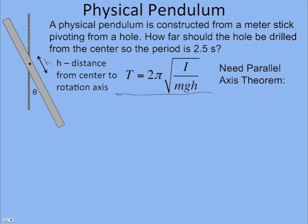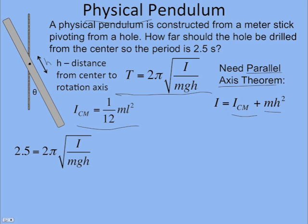Unfortunately, or fortunately, because we love the parallel axis theorem, we're going to need to use it. You need to always use it for a physical pendulum because it's always going to be rotating about a point off-center. Otherwise, it won't oscillate back and forth. So we know I is the rotational inertia about the center, plus mh squared. And the rotational inertia of a rod about its center is 1/12 ml squared.